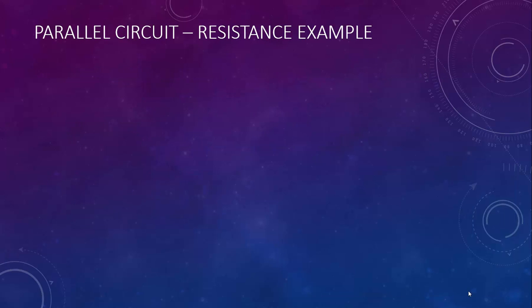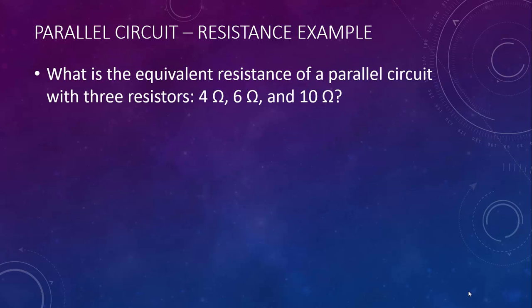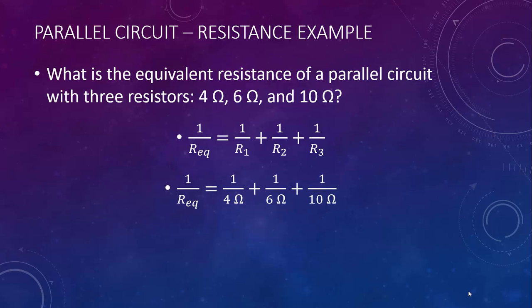Let's take a look at an example of a resistance calculation. I want to point out a common mistake that people make so that you don't make it. What is the equivalent resistance of a parallel circuit with three resistors: 4 ohms, 6 ohms, and 10 ohms? We can start with our equation for equivalent resistance in a parallel circuit and plug in 4, 6, and 10 ohms. If we do the addition on the right, we find that the reciprocal of the equivalent resistance is 0.52.